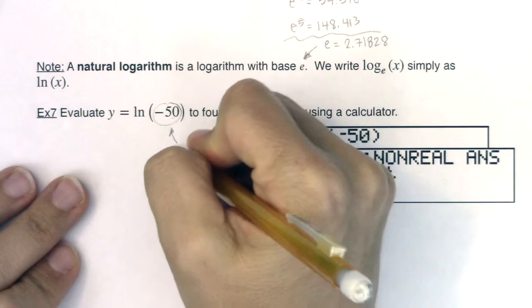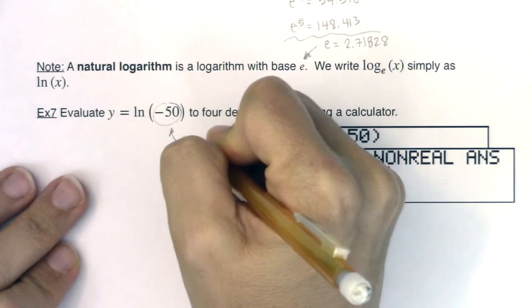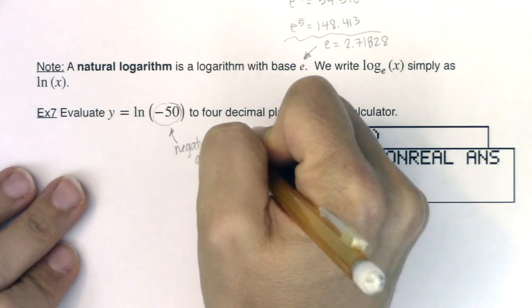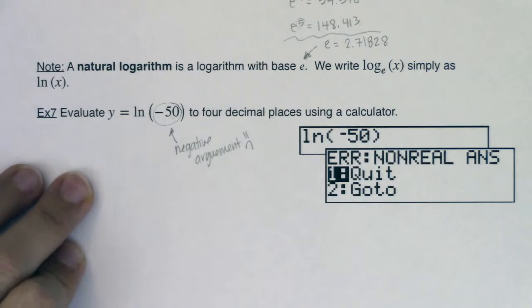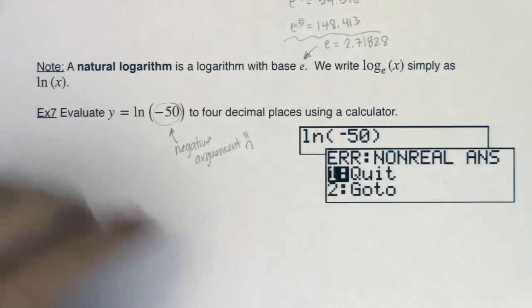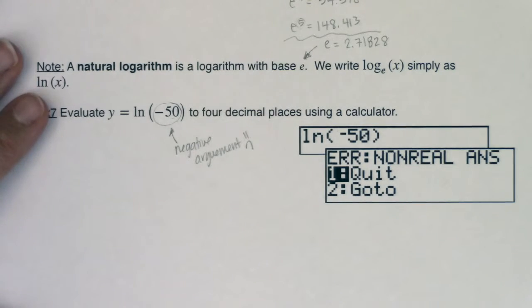So I'm going to just make sure we point this out: negative argument. This is one of our three domain issues, and we would have violated that. We're not allowed to have a negative argument. And that's your calculator trying to tell you, hey, this is not good.